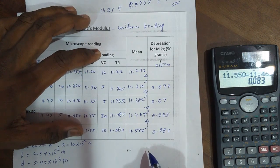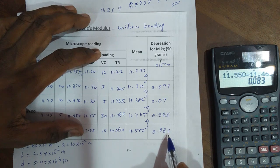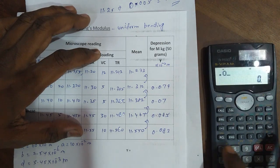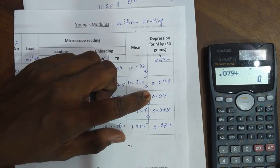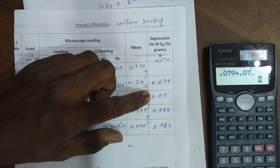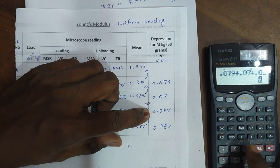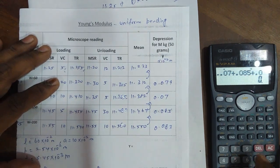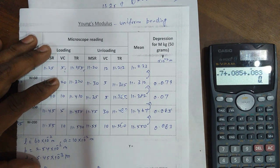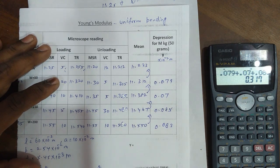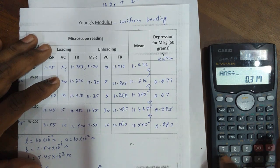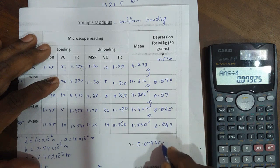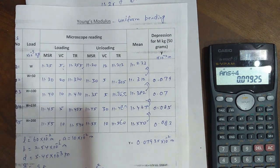Now you find the mean value of depressions. Add these four values and divide by four. So 0.079 plus 0.07 plus 0.085 plus 0.083. The total answer is 0.317, then divide by 4. The answer is 0.07925 times 10 to the power of minus 2 meters. This is the depression of the beam.